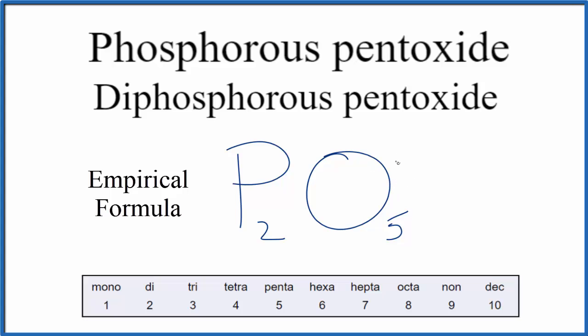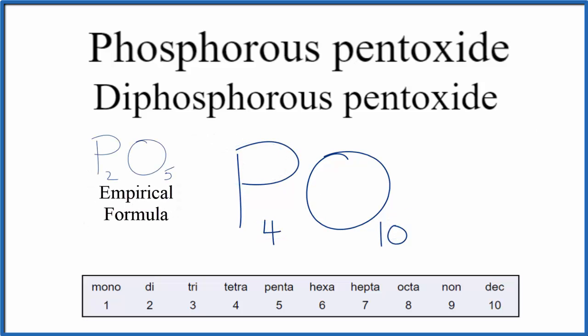Later, when they had more advanced techniques, they realized that it was actually P4O10, and that the molecule looked something like this here. So we have the same ratio, 2 to 5 essentially, 4 to 10.